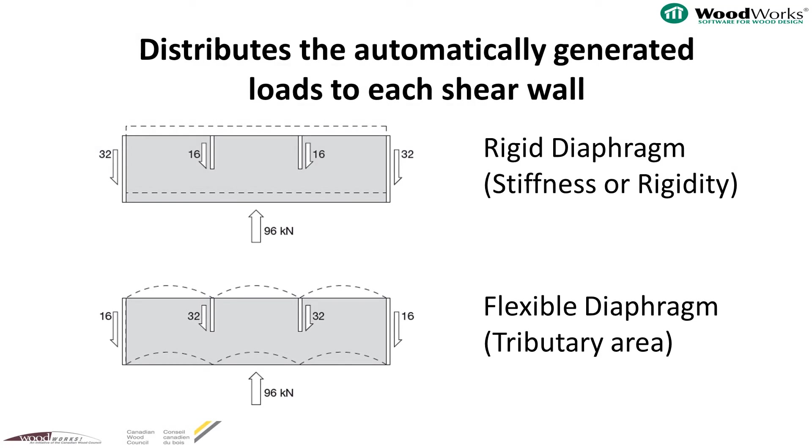This example demonstrates two extremes where complete opposite levels of load are distributed to the shear lines, depending on the distribution method. This is why it is recommended to use the envelope approach.